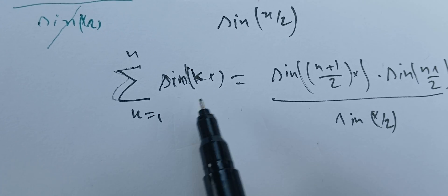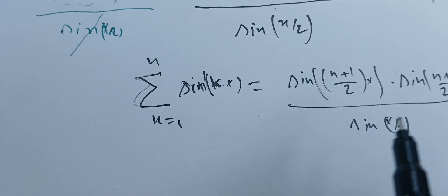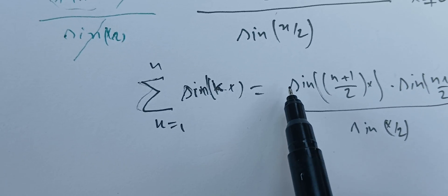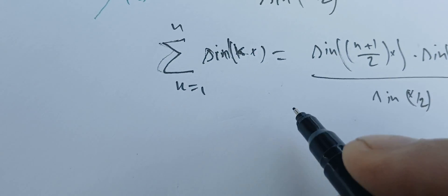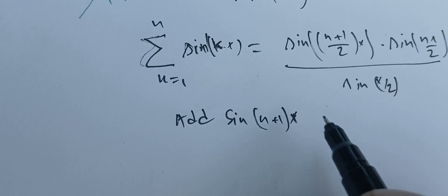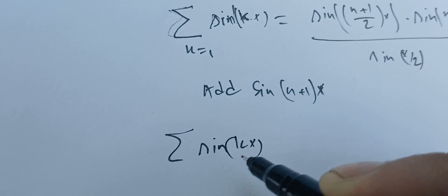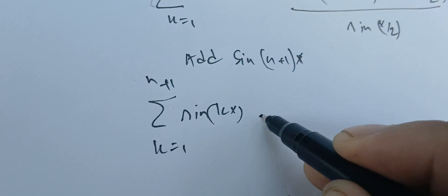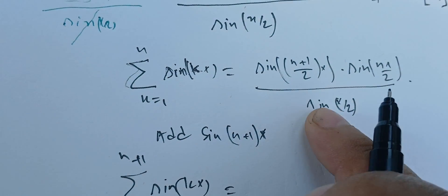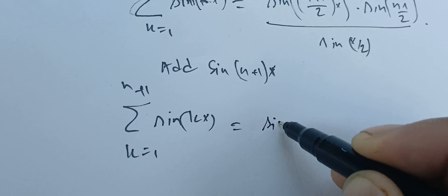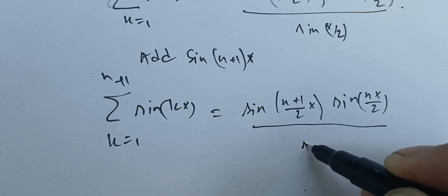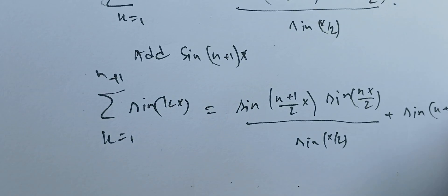To prove this result for n plus 1, we just add sine of (n+1)x to both sides. On the left side we get the sum of sine(kx) going from 1 to n plus 1. On the right side we need to prove that we have sine of (n+2)/2 times x times sine of (n+1)x/2, over sine of x/2. So we have sine of (n+1)/2 times x times sine of nx/2 over sine of x/2, plus sine of (n+1)x.